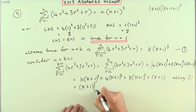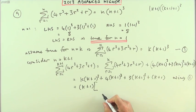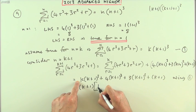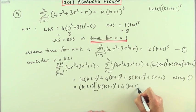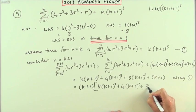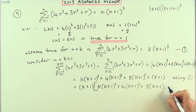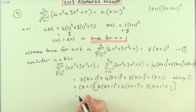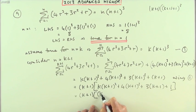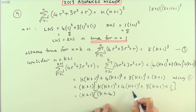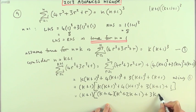So I'll get (k+1) times, and I'll be left with k(k+1)² plus 4(k+1)² plus 3(k+1) plus 1. That would be (k+1) times (k+4)(k+1)², which will be (k²+2k+1) plus 3k plus 3 plus 4.